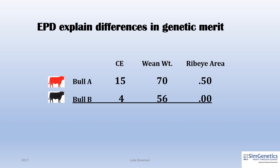EPDs are only useful to compare animals. An EPD by itself is essentially meaningless and will not give you an absolute prediction on anything when used alone. Here we can see the EPD for calving ease direct of Bull A versus Bull B. When bred to virgin heifers, you would expect the calves out of Bull A to have 11% more unassisted births compared to those of Bull B. As we look at weaning weight, you can see a 14-pound advantage with calves out of Bull A. Finally, there is a half square inch advantage in carcass ribeye area of the calves by Bull A compared to Bull B. With all of this in mind, Bull A is the most desirable due to its higher calving ease direct, advantage in weaning weight, and larger ribeye area EPD — all things that beef breeders can be financially rewarded for selecting.